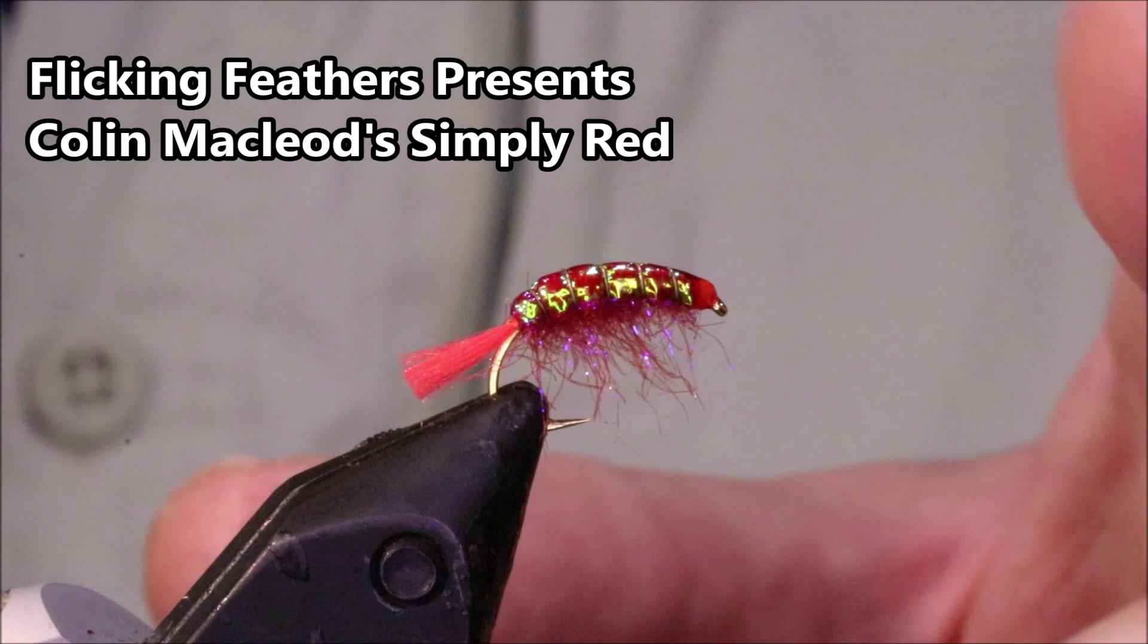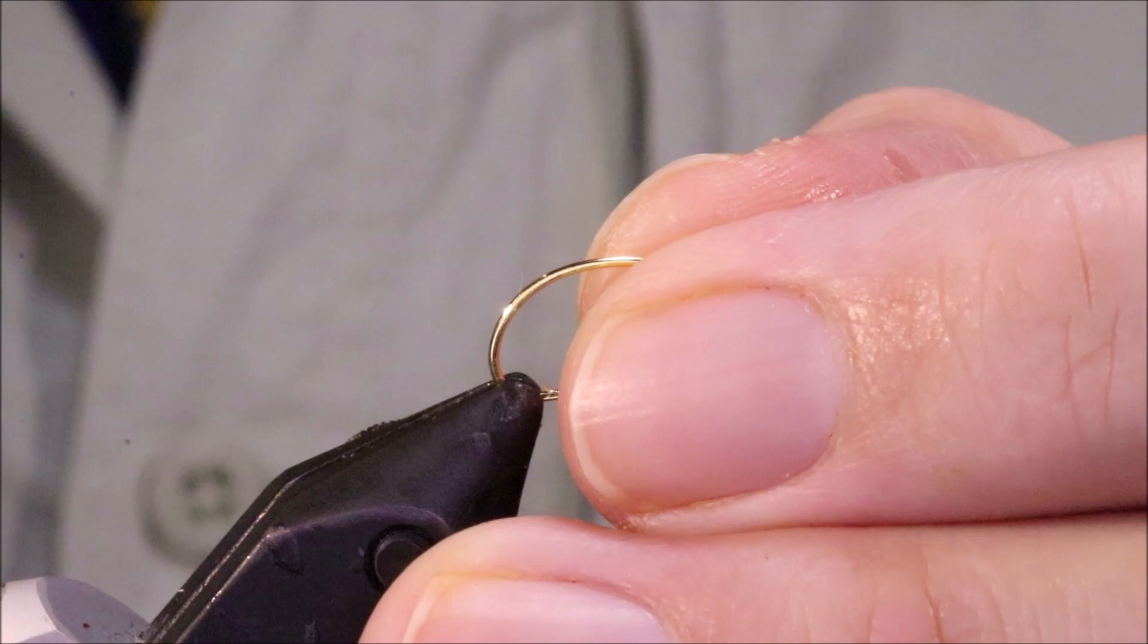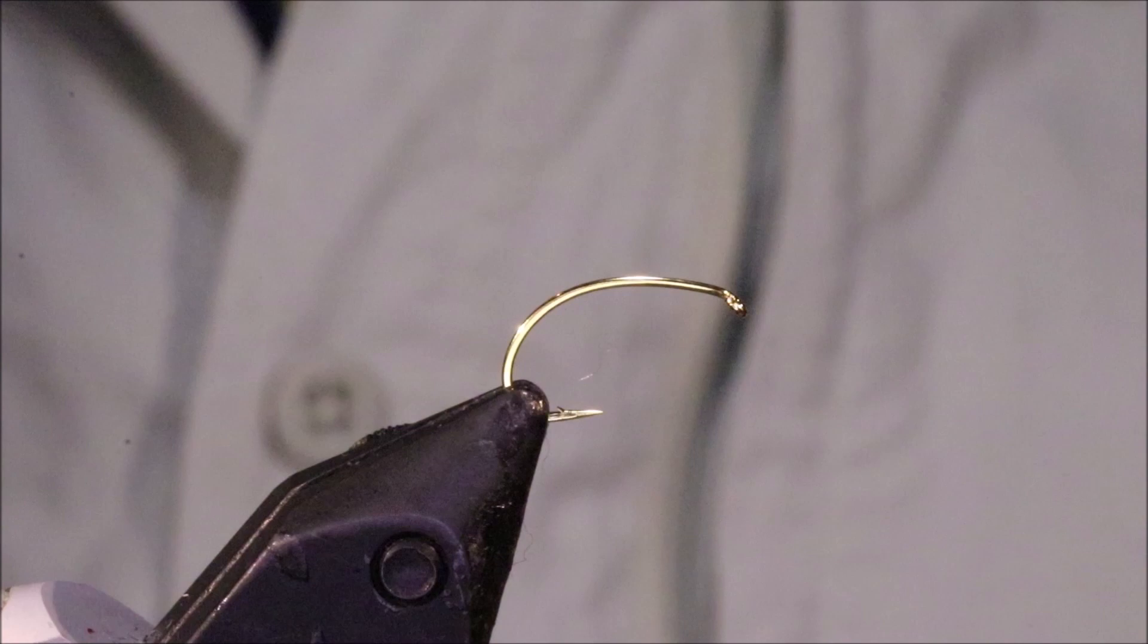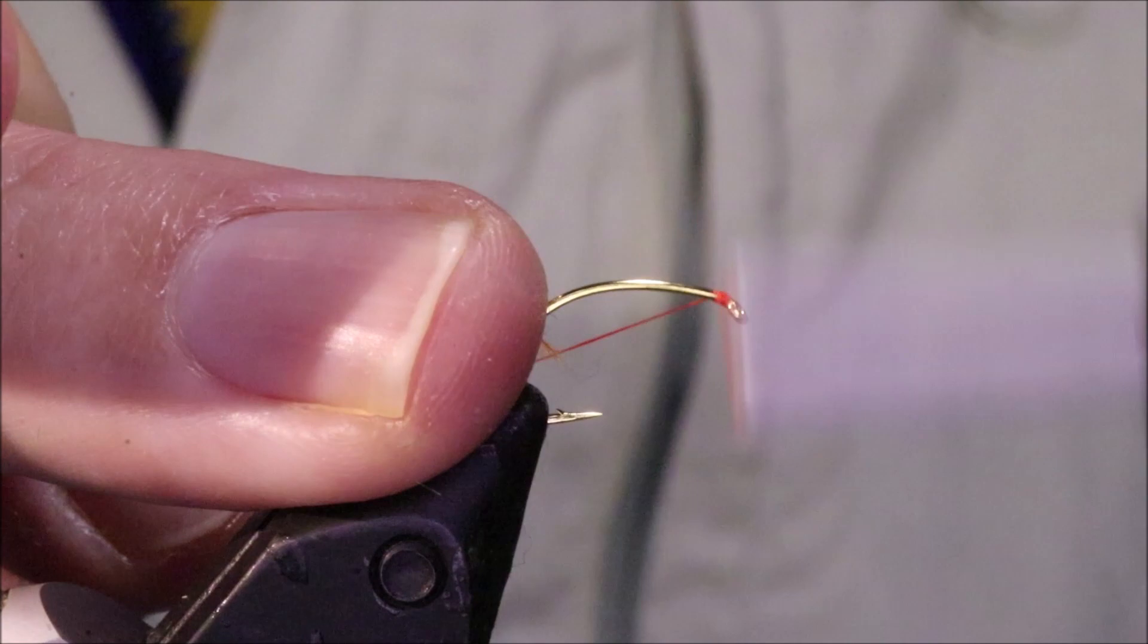Hi everybody, Martin of Flickingfeathers again today and I'm tying Colin McLeod's Simply Red, it's another mullet pattern, obviously very bright attractor style shrimp pattern and this will work for other species as well, bass, sea trout will eat this, any of the estuarine species, I'm sure if you weighted it you would catch a ghrelin on it as well.